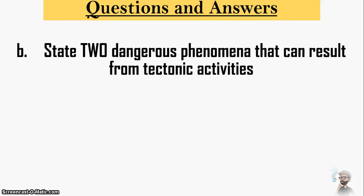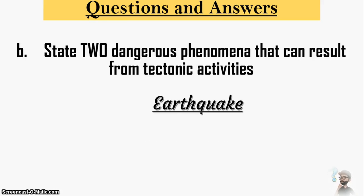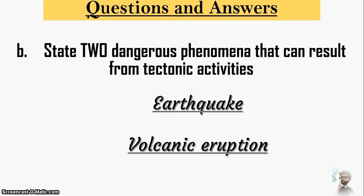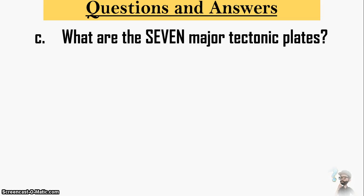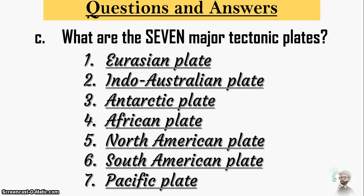Number two: state two dangerous phenomena that can result from tectonic plates. They are earthquakes and volcanic eruption. Number three: what are the seven major tectonic plates? We have the Eurasian plates, the Indo-Australian plates, the Antarctic plate, African plate, the North American plate, the South American plate, and the Pacific plate. You may want to pause this and go over them again.